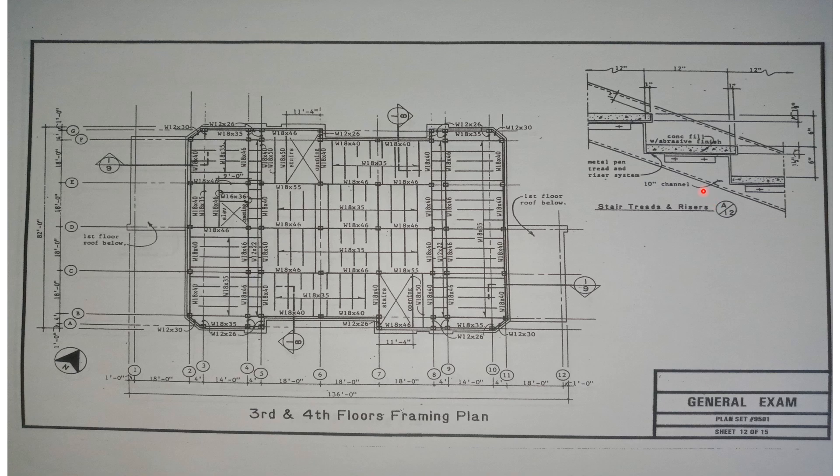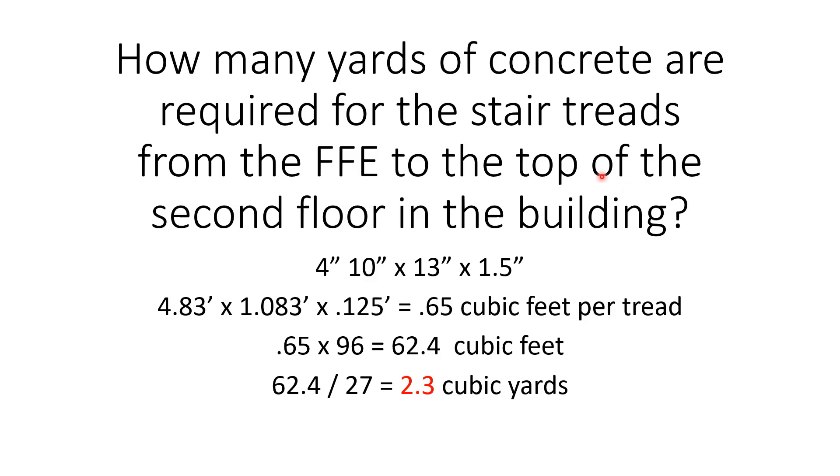Once again, we have our dimensions, which are 13 inches by an inch and a half by four foot 10, right? Okay. So let's go on. So what we have is we have four foot 10. So four foot 10 times 13 inches, that's the depth times an inch and a half. That's the thickness. Of course, four foot 10 is the width.